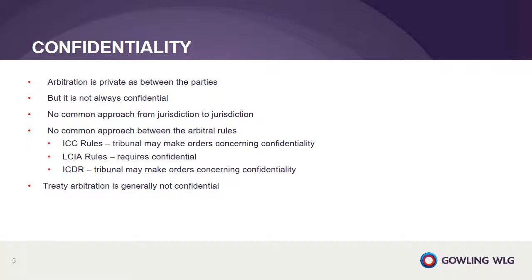We cannot say that arbitration is always confidential. In some jurisdictions the law says it's not confidential, and if an arbitral award is brought before the court for challenge or enforcement, confidentiality may be lost. Common rules like the ICC, LCIA, or ICDR either require confidentiality or give the tribunal the power to make proceedings confidential, which in practice they often do. It's worth noting that treaty arbitration is often not confidential — documents and awards are often published on the ICSID website and you can even watch proceedings through live streaming, because treaty arbitrations involve states and therefore should be open to the public.